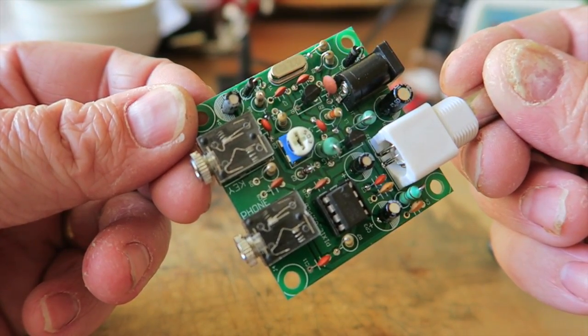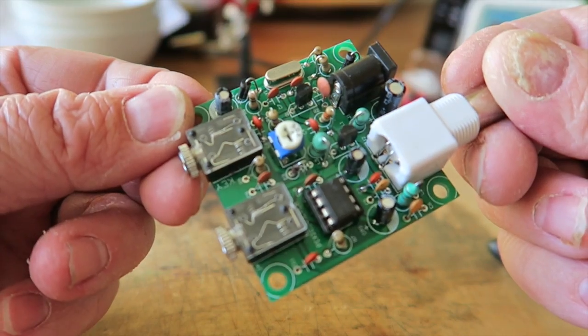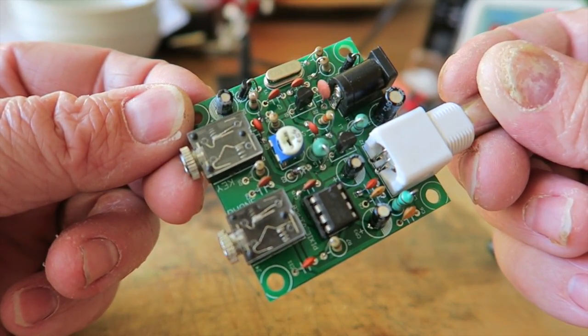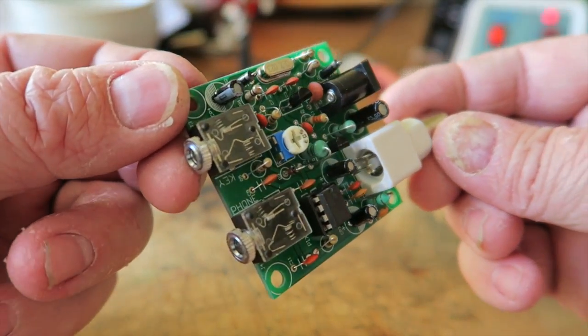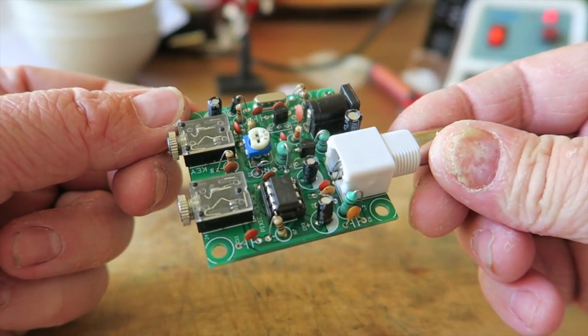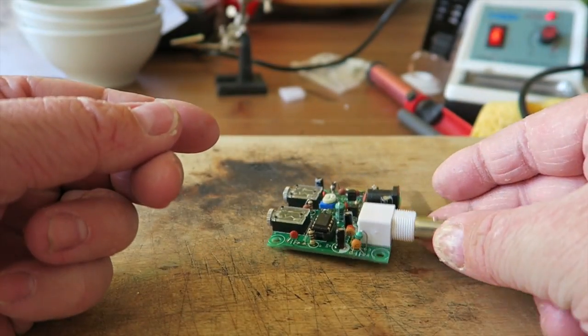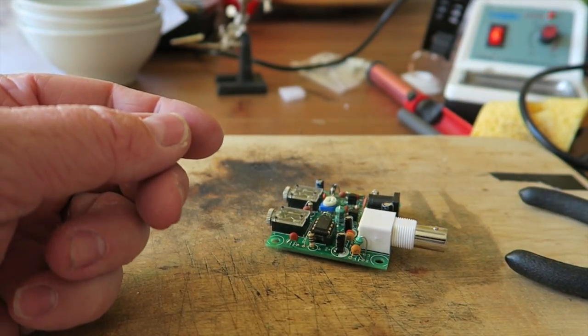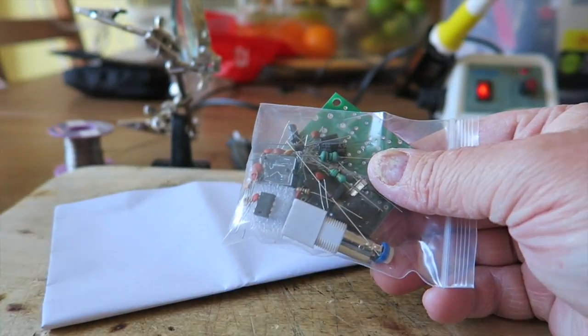Hi everybody, just thought we'd do a quick build today. This is a CW transceiver called the Pixie which I've just purchased and it's a very easy and quick build, so let's have a look and see what we've got.